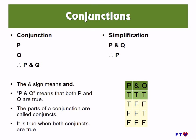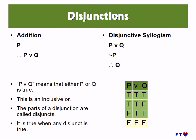To recap what we learned in the previous videos: conjunction is the rule for inferring a conjunction from two separate propositions, and simplification is the rule for inferring a single proposition from a conjunction. Addition is the rule for inferring a disjunction from a lone proposition, and disjunctive syllogism is the rule for inferring a single disjunct of a disjunction from the disjunction and the denial of the other disjunct.